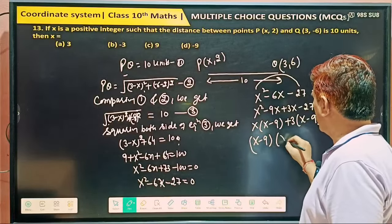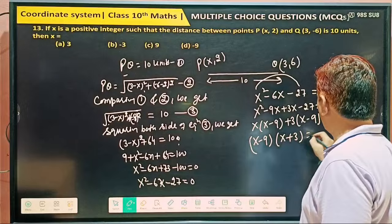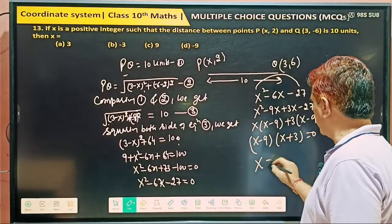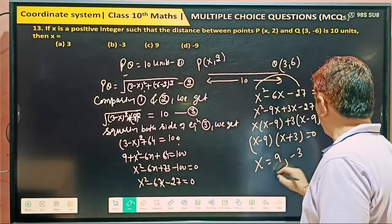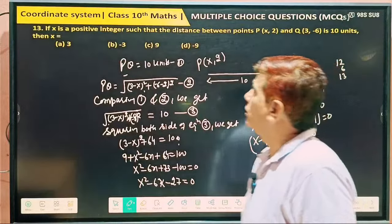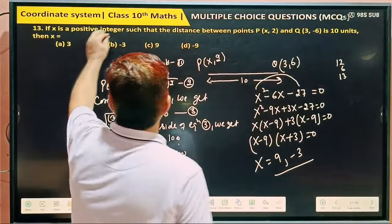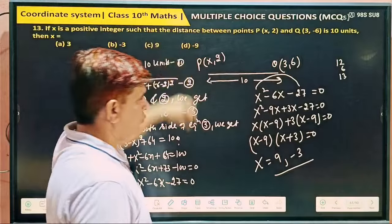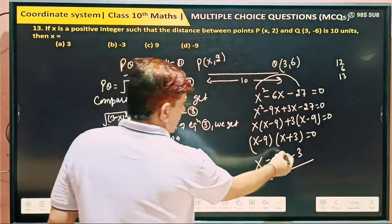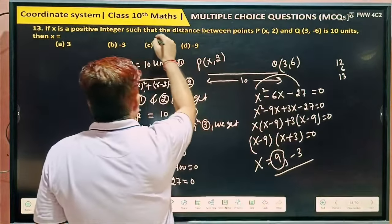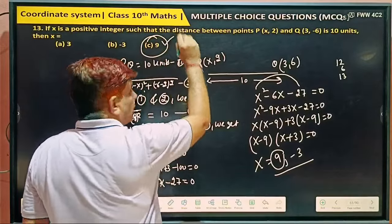Then what's common? X is common. X minus 9 plus 3 times x minus 9 is equal to 0. So x minus 9 and x plus 3 equal to 0. So x equal to 9 and minus 3. These are the two values of x.